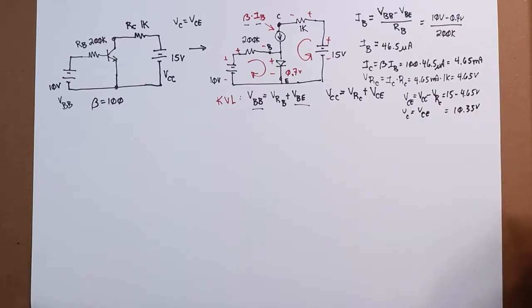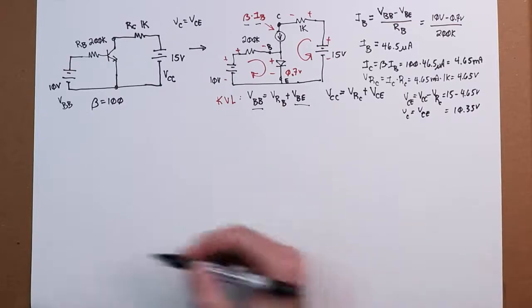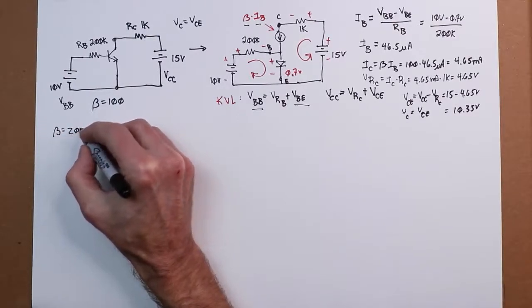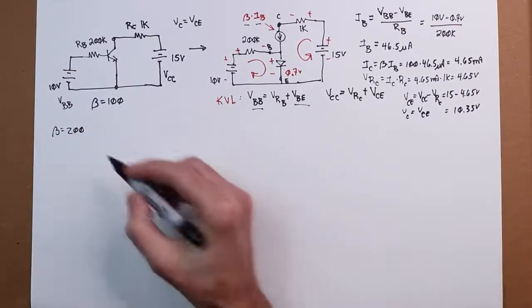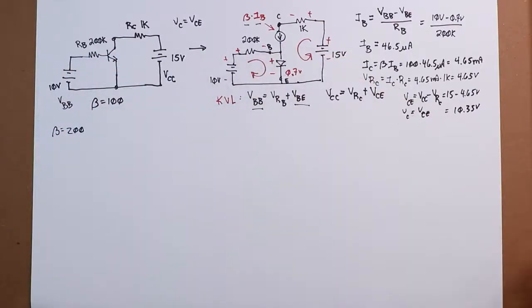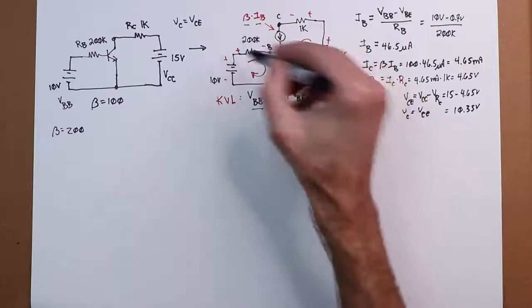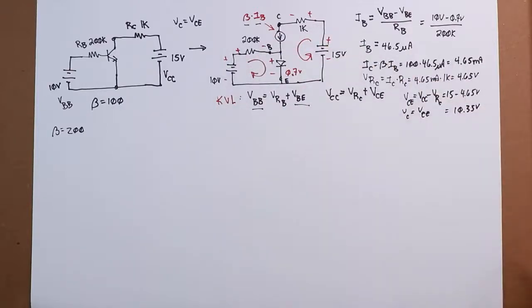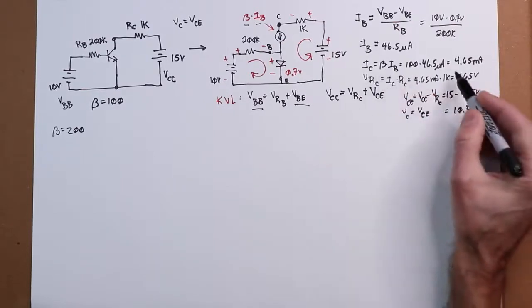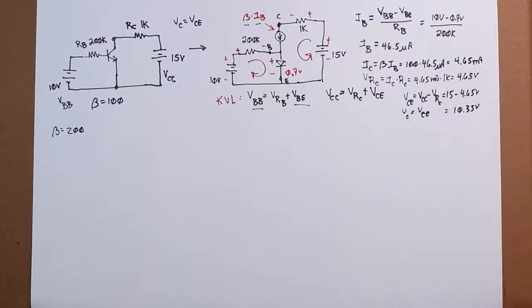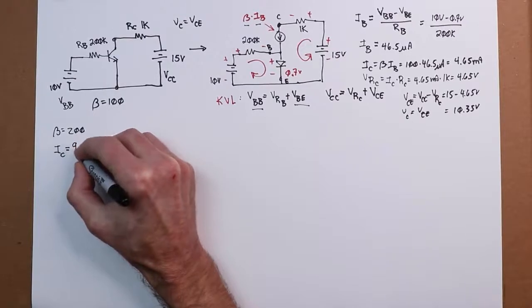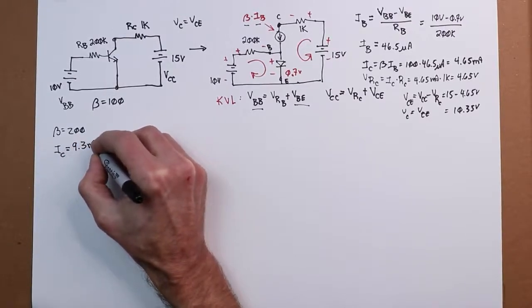Okay, now what happens if we go and change the beta? So let's say you put a different transistor in here and now your beta is twice the size, it's 200. What ends up happening? Well, this loop, this initial loop doesn't change. You still have 10 volts, you still have 0.7, you still have 200k. You're still going to get 46.5 microamps, no change. However, because beta has doubled, that means your collector current will have doubled.